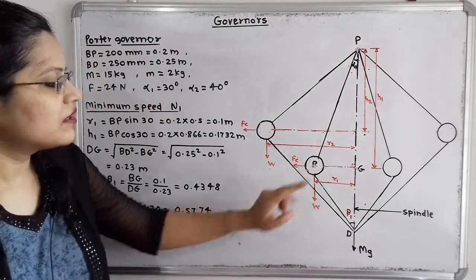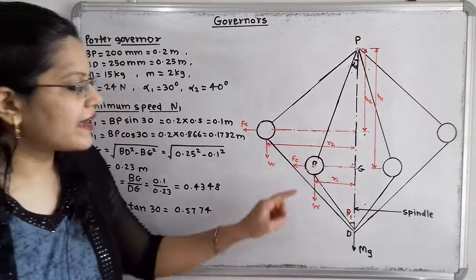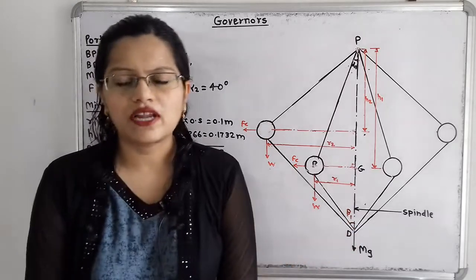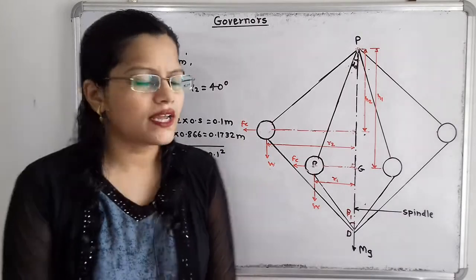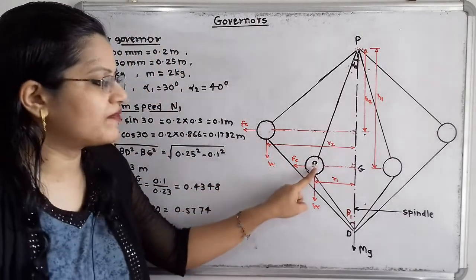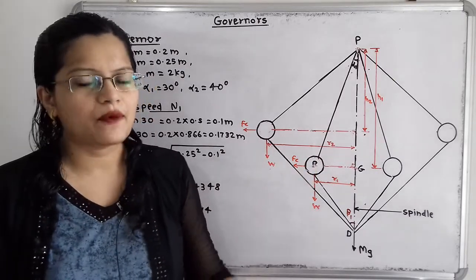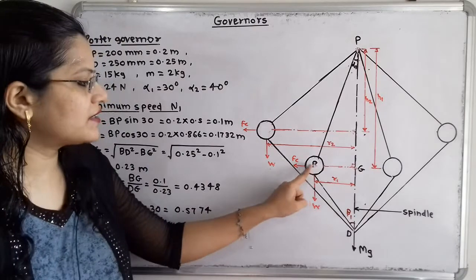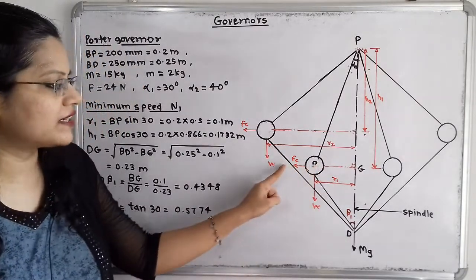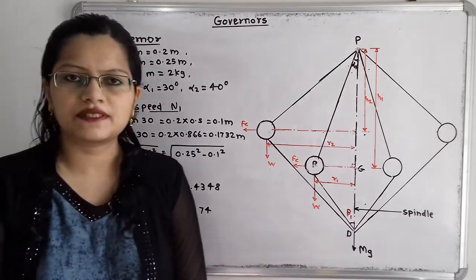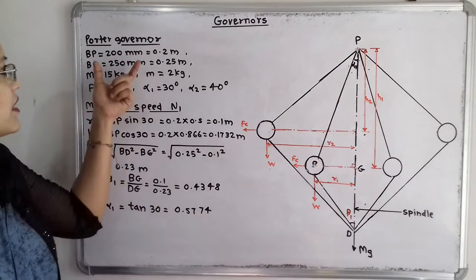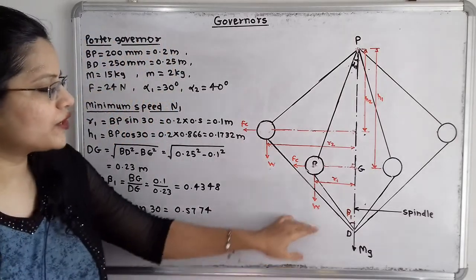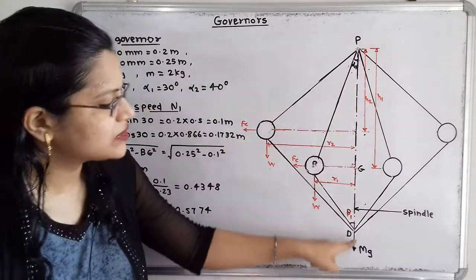The angle beta 1 is the angle made by link BD with the vertical spindle axis, so beta 1 should also be small. Now small m is the mass of the fly ball. Because of the mass of the fly ball, there is a weight acting vertically downward through the center of the fly ball, and the centrifugal force Fc acts in the radially outward direction through the center of the fly ball. In the case of a Porter governor, the central load is attached to the sleeve and acts vertically downward along the spindle axis.